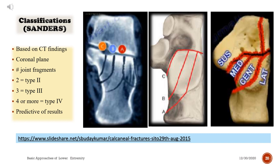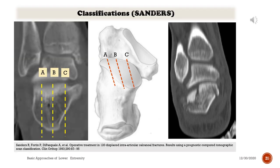The Sanders classification is based on CT findings and the number of fragments. Two fragments is classified as Type 2, three fragments as Type 3, and four or more fragments as Type 4. It is predictive of results. Notice the CT findings, fracture lines, and classification logic.